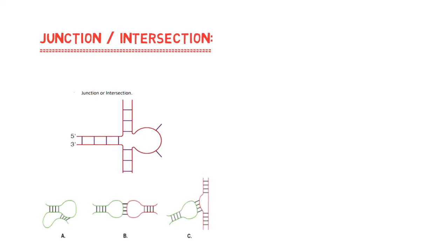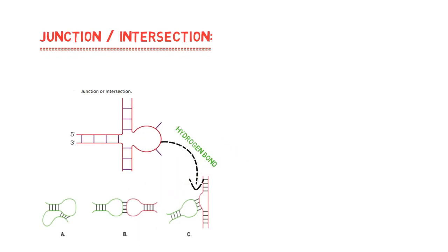Unpaired bases in secondary structures form hydrogen bonds with each other. RNA tertiary structures are formed when RNA unpaired bases bond in the secondary region.